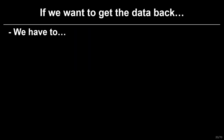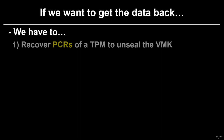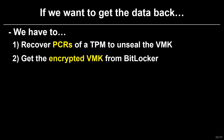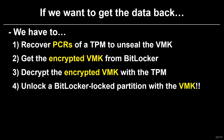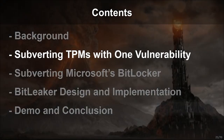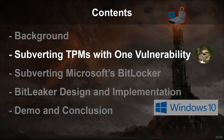Alright, let's summarize the things we have to do. As I mentioned, the TPM protects the VMK. So firstly, we have to recover PCRs of a TPM to unseal the VMK. Secondly, we have to get the encrypted VMK from BitLocker. Thirdly, we have to decrypt the encrypted VMK with the TPM. And finally, we have to unlock a BitLocker-locked partition with the VMK — subverting TPMs with one vulnerability.